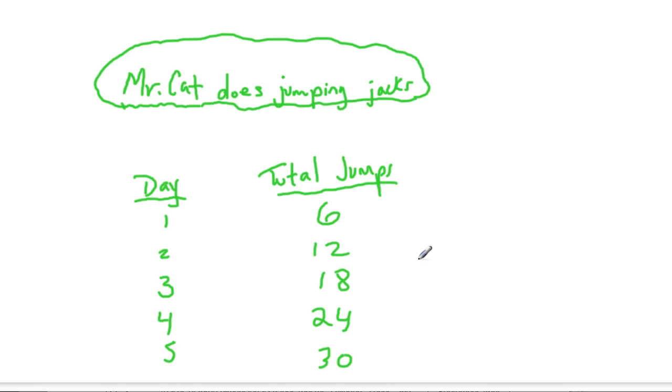So each day you want to figure out the total number of jumps. On day four, Mr. Cat has done twenty-four jumping jacks, day five he's on thirty, day three is eighteen. Look for something common here, a pattern, and you see that it's going up by six each time. This means he's doing six jumping jacks every day—six jumps per day. That's our important pattern that we're going to hold on to.